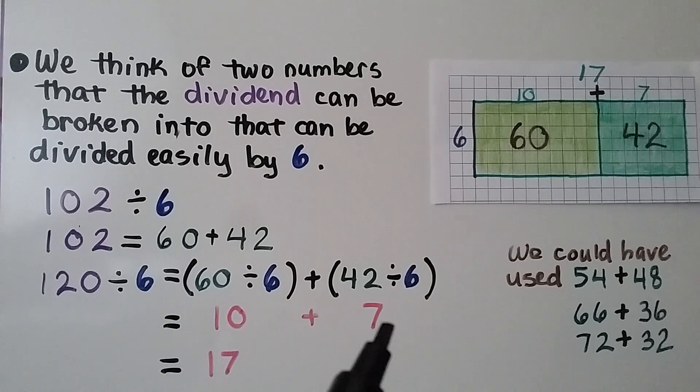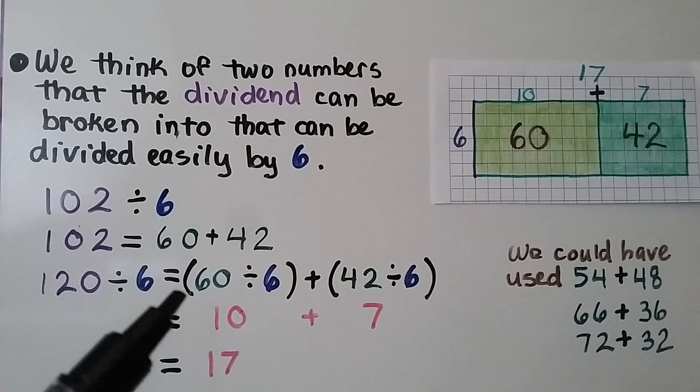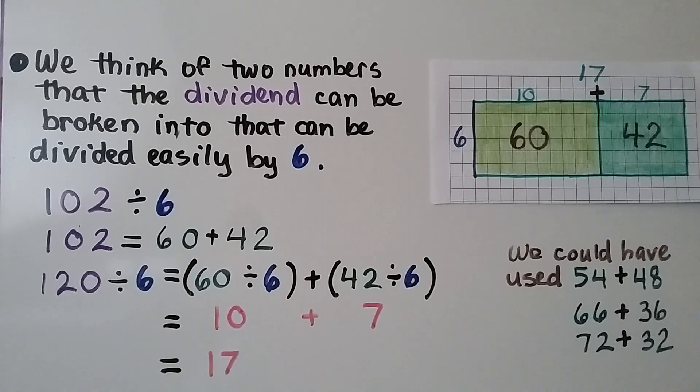but actually 60 and 42 are probably the easiest because when we do 60 divided by 6 we get a 10. And 42 divided by 6 we get a 7. We have 17. Sometimes multiples of 10 are easier to start with.